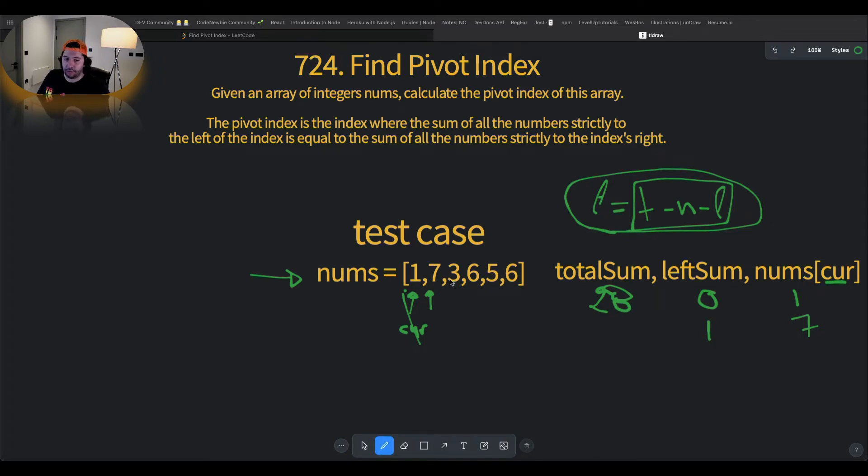Iteration number 2. The current element is the number 7. And what we need to do is to compare if 28 minus 7 minus 1 is equal to 1. Of course that's false. So we move ahead.